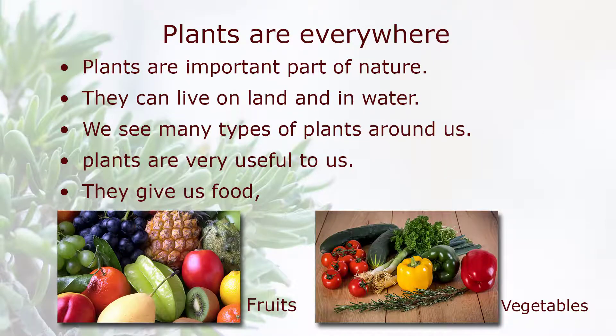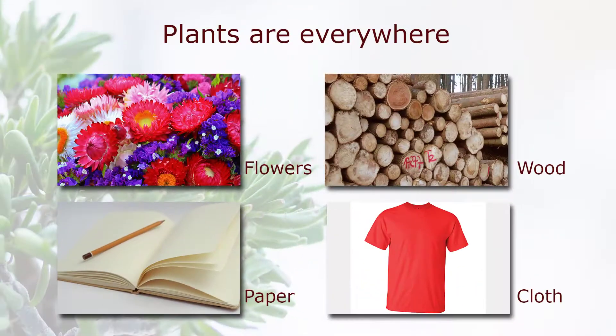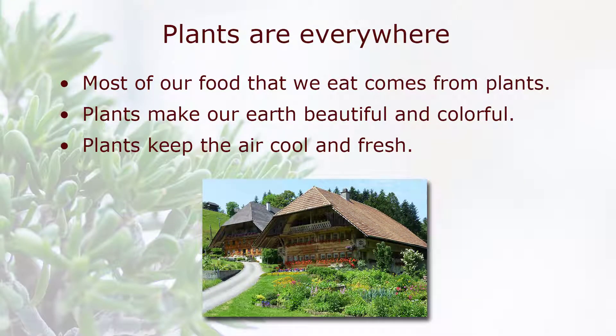Plants are everywhere. Plants are an important part of nature. They can live on land and in water. We see many types of plants around us. Plants are very useful to us. They give us food — fruits, vegetables, flowers, wood, paper, clothes, etc. Most of the food that we eat comes from plants. Plants make our earth beautiful and colorful, and they keep the air cool and fresh.